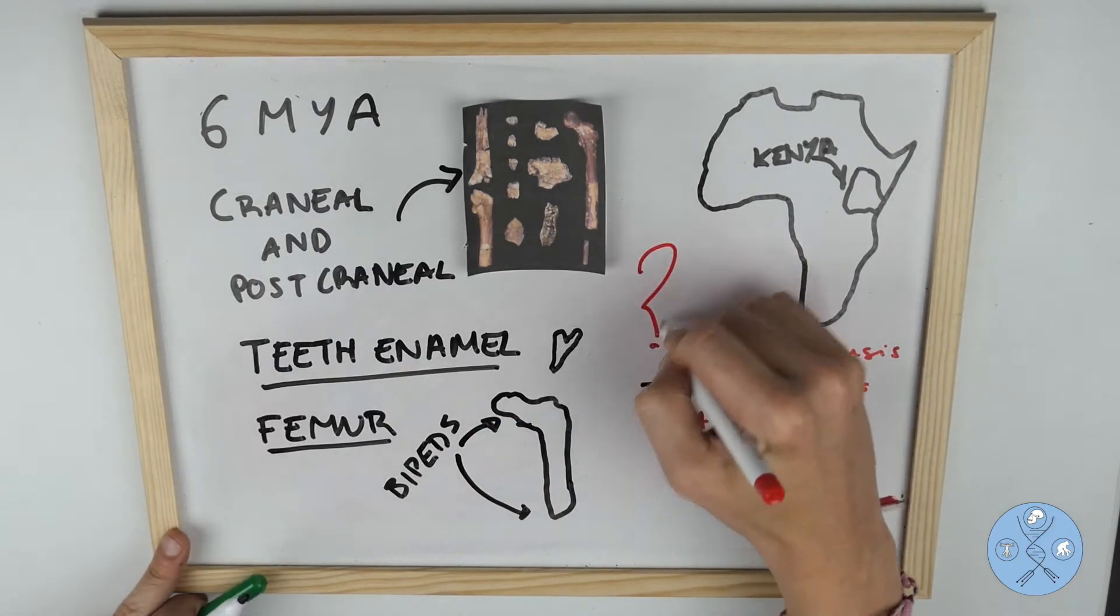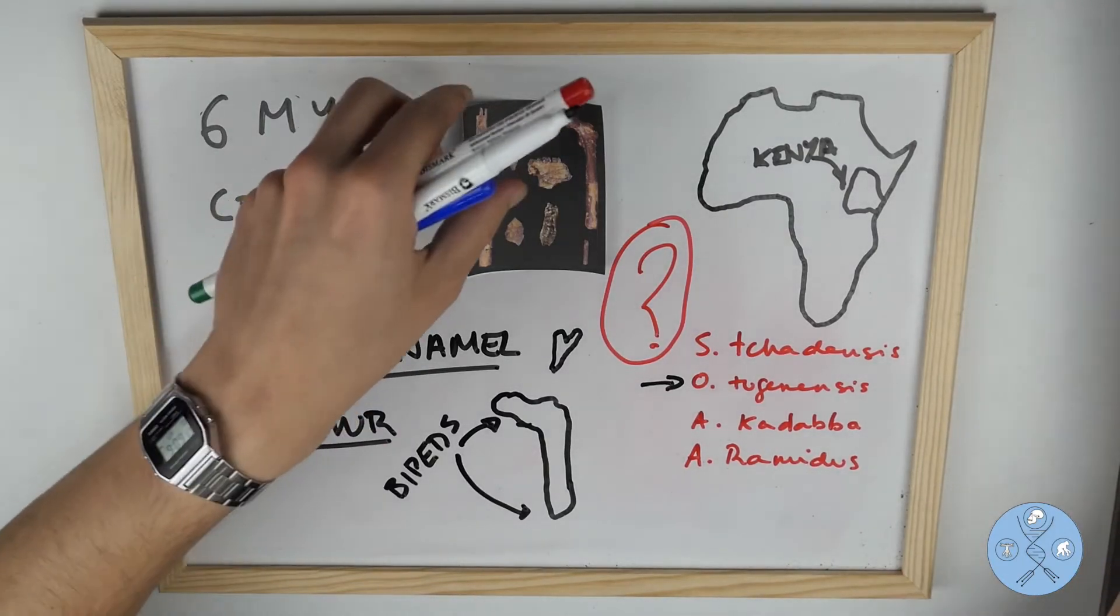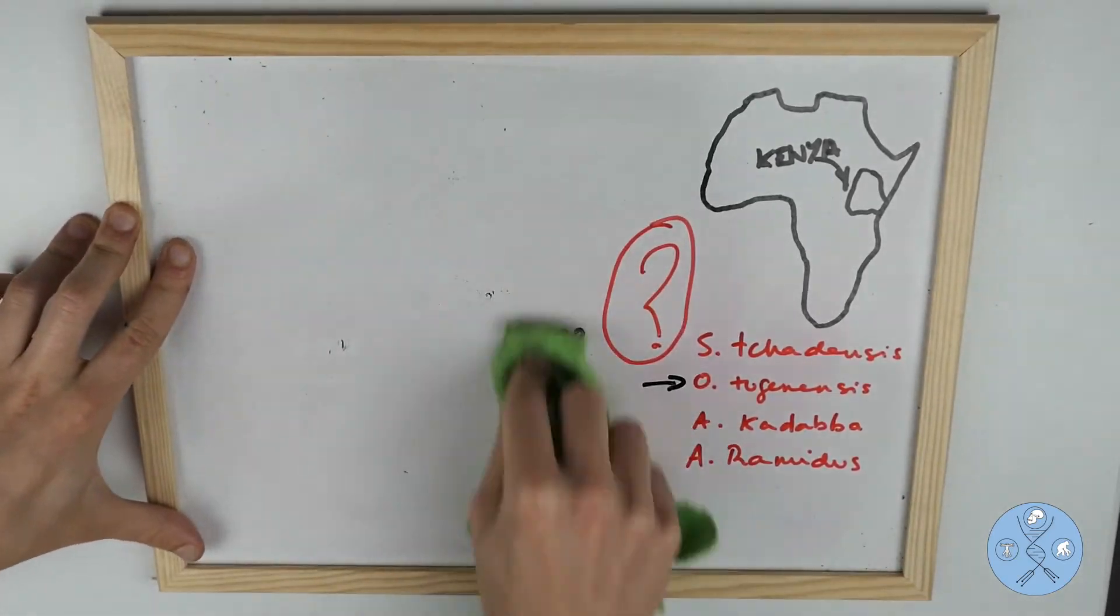However, it is not also very clear if this evidence belongs to an early hominin as there are also critics to this hypothesis. It can be concluded that it is a creature related to the common ancestor of panins and hominins.